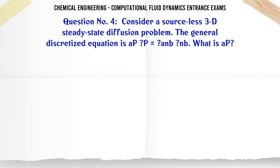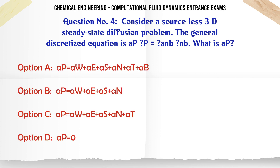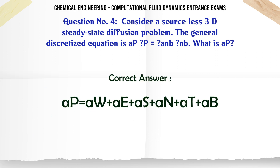Consider a source-less 3D steady-state diffusion problem. The general discretized equation is a_P * phi_P = sum(a_nb * phi_nb). What is a_P? A. a_P = a_E + a_S + a_N + A_T + A_B. B. a_P = a_E + a_S + a_N. C. a_P = a_E + a_S + a_N + A_T. D. a_P = 0. The correct answer is A: a_P = a_E + a_S + a_N + A_T + A_B.